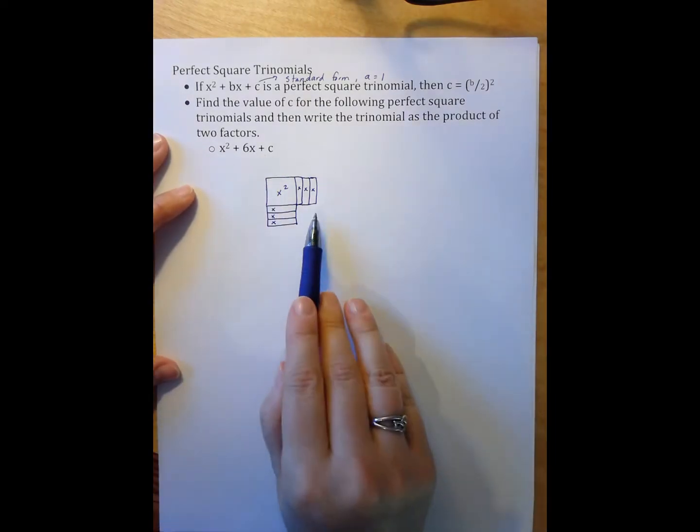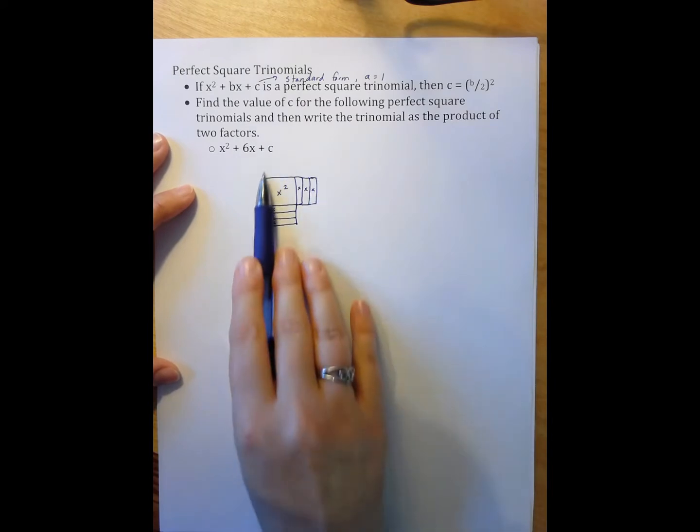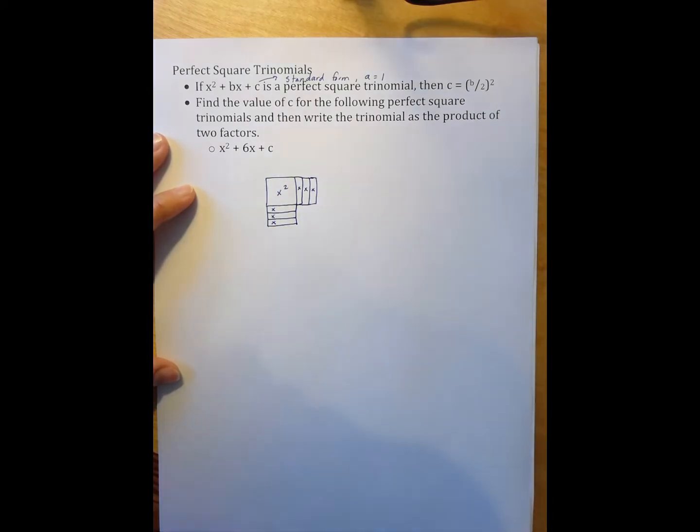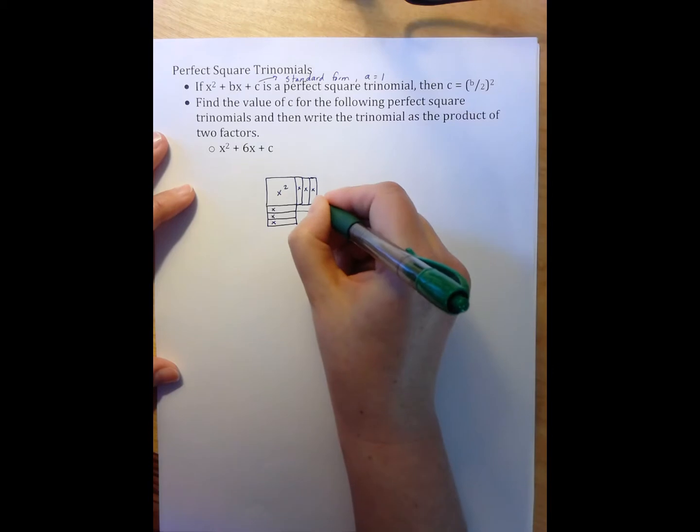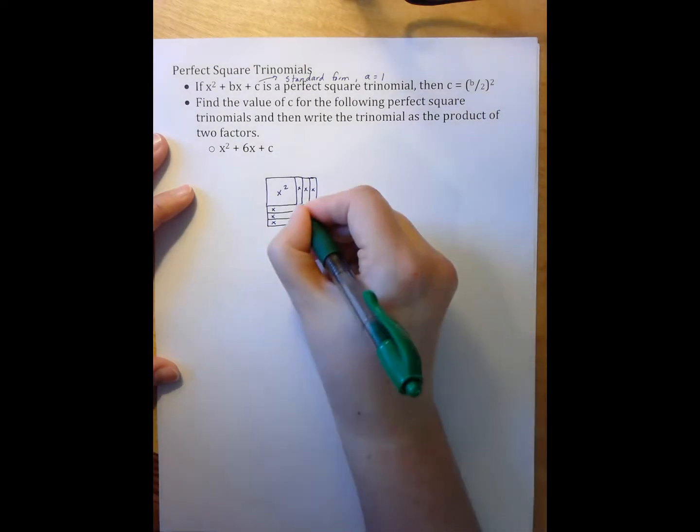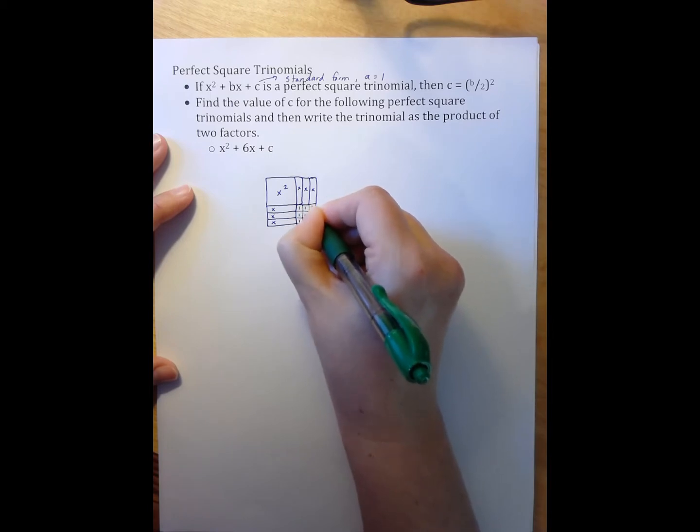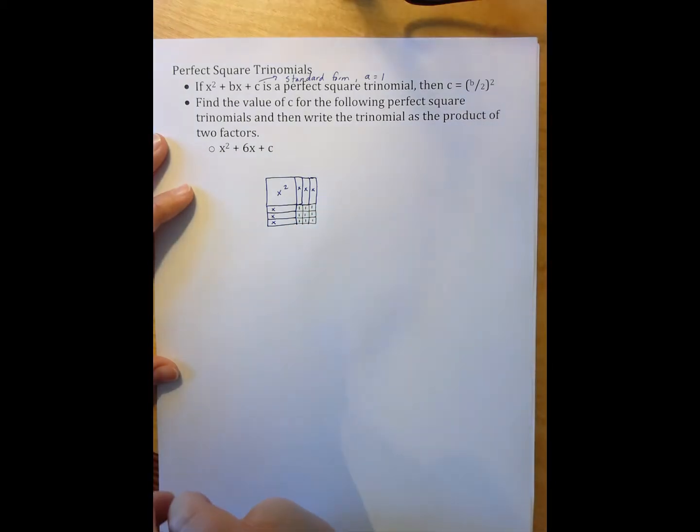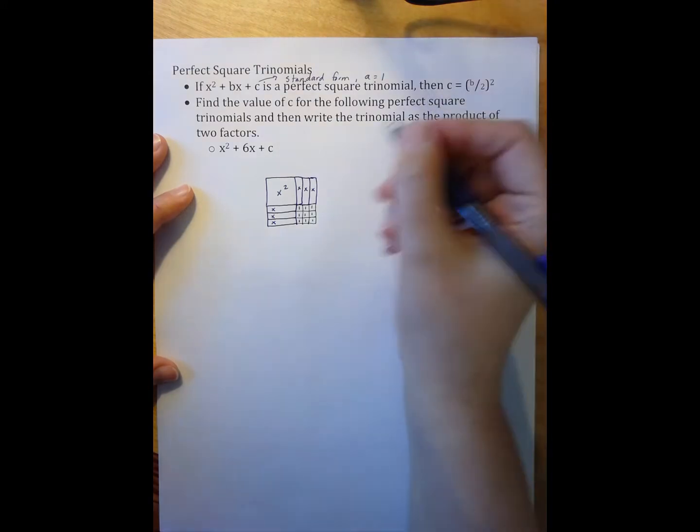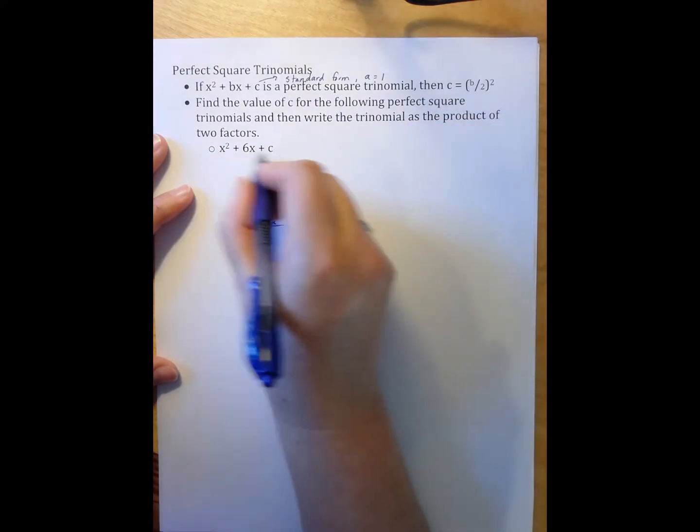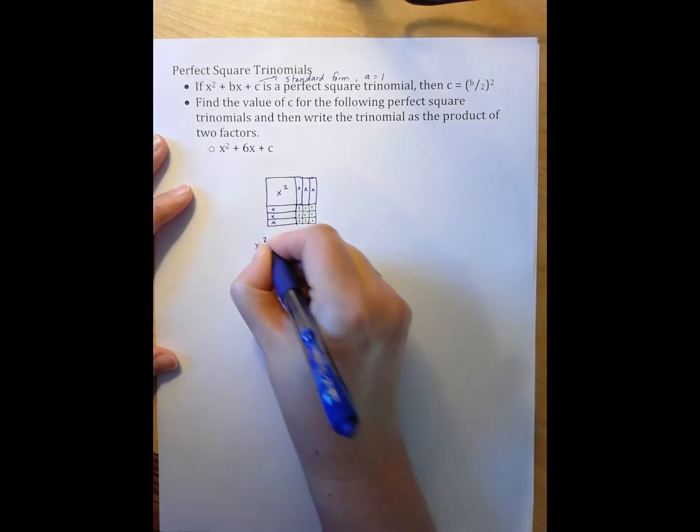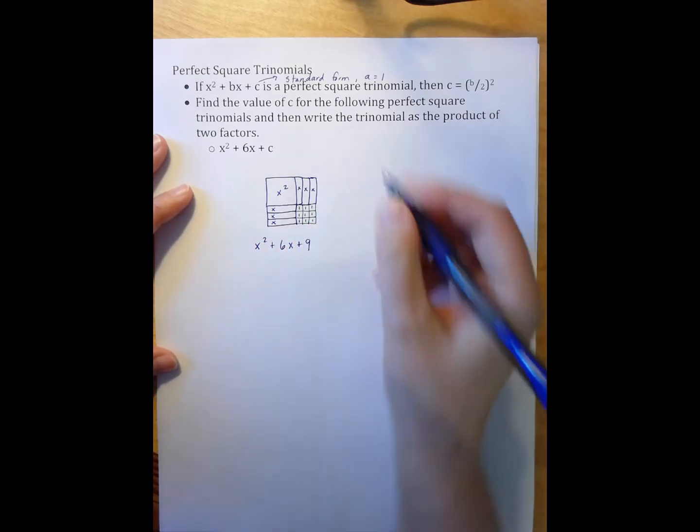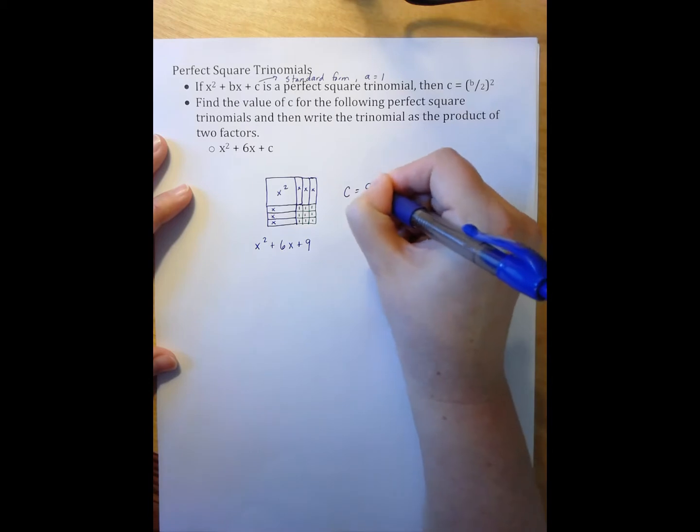Now I need to find out what goes here in order to make this the shape of a square. I can actually fill in this missing piece here by extending the lines from my x tiles, which gives me 1, 2, 3, 4, 5, 6, 7, 8, 9 little 1 tiles, which means I can rewrite this now that I'm making it a perfect square trinomial into x squared plus 6x plus 9. My c equals 9.